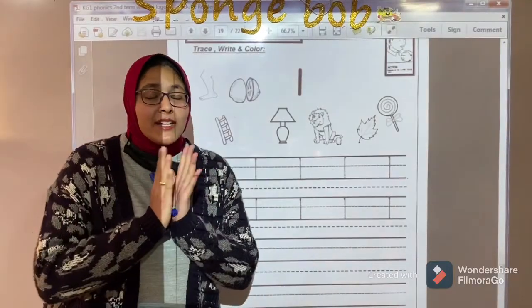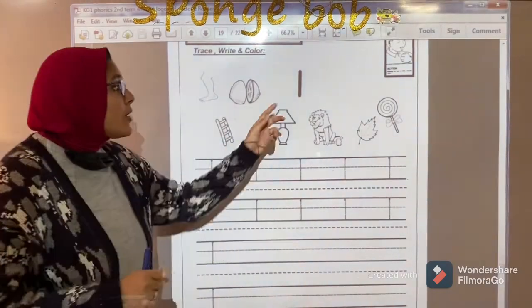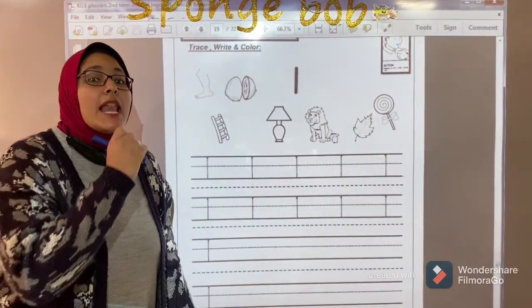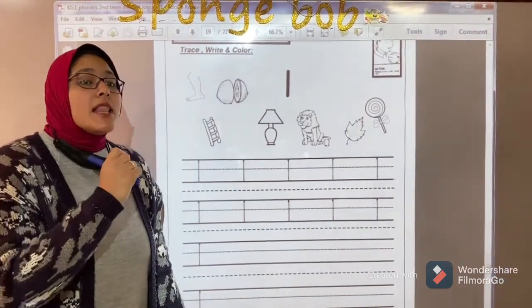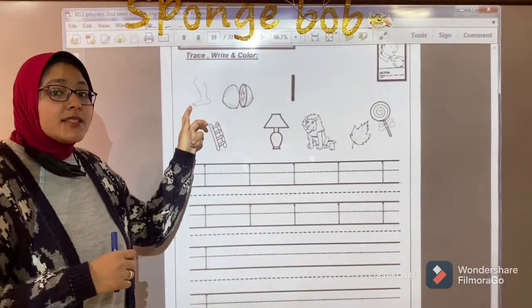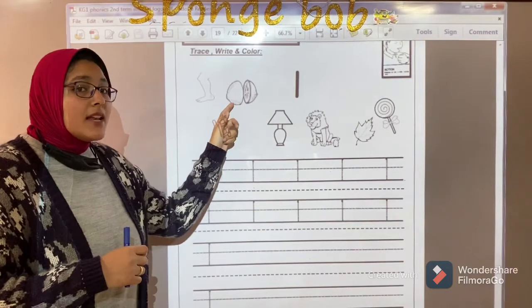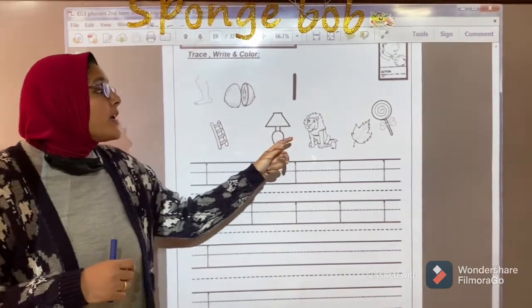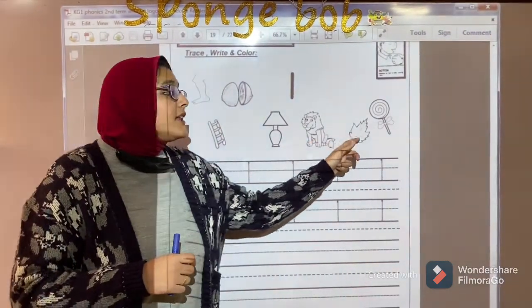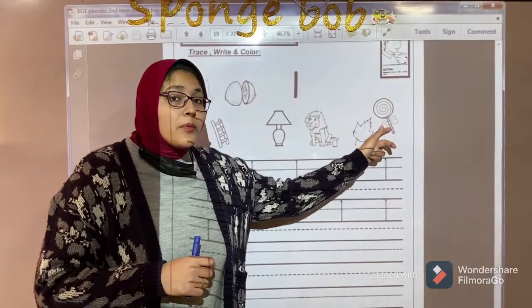And now let's remember together our sound. What is the sound? L, l, l, l. And what is this? Leg, leather, lemon, lamp, line, leaf, lollipop.